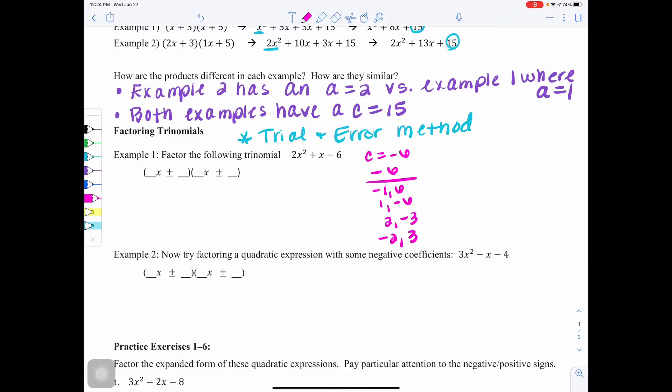Now the second step is a new step. Because the a value is not a 1, we actually have to list the factor pairs of the a value as well. So we have 2, we're going to have 1 and 2, concentrating on the positive factors. If you wanted to list negative 1 and negative 2, you could, but you will not be ending up using them in this example.